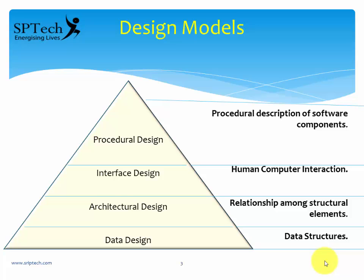We have already discussed design models in the previous session. A design model could consist of data design, architectural design, interface design, and procedural design. The outcome of a data design is generally to produce the data structure. The outcome of an architectural design is to show the relationship among structural elements — the subsystems are defined in architectural design. Interface design covers human-computer interaction.